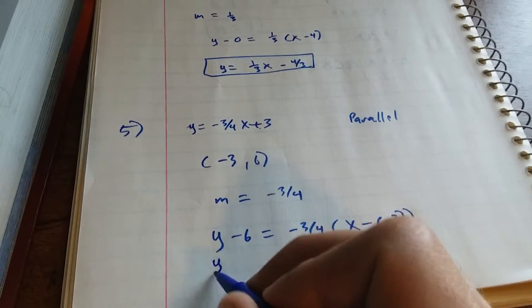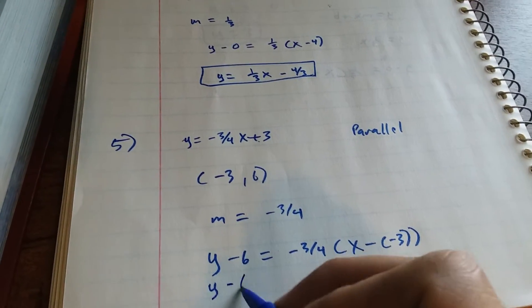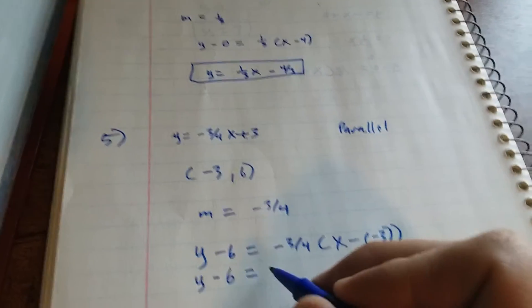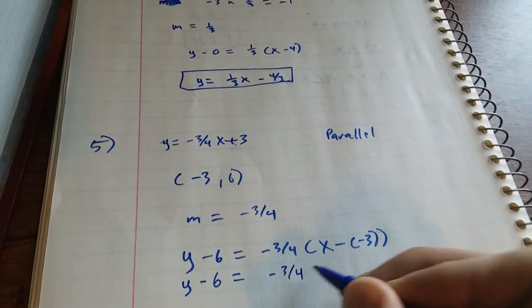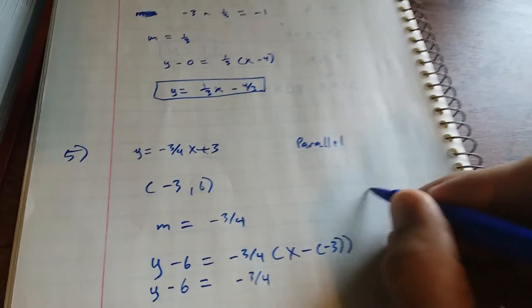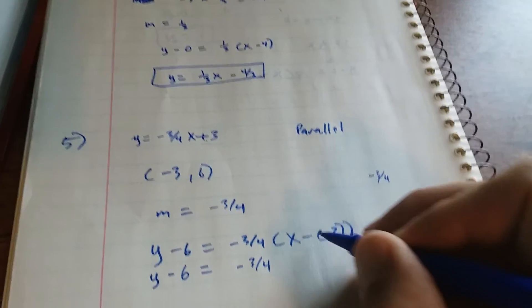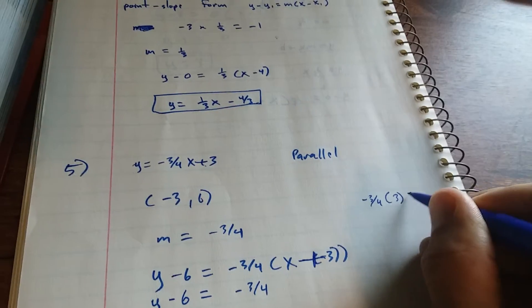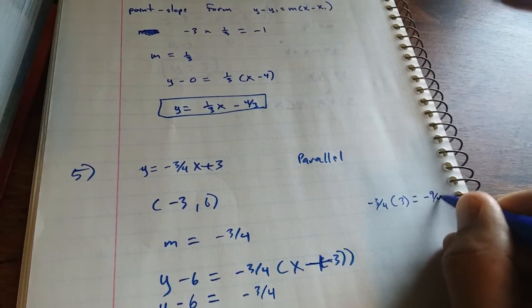You get y minus 6 equals, okay, you've got to use the distributive property here, negative 3/4x. And then negative 3/4 times 3. Because remember, this becomes a big plus sign. That equals negative 9/4.